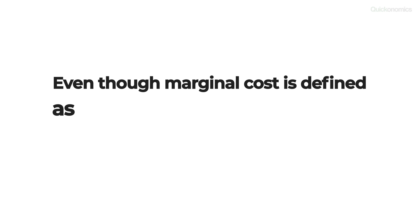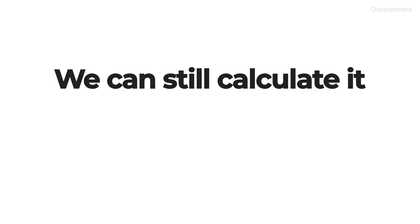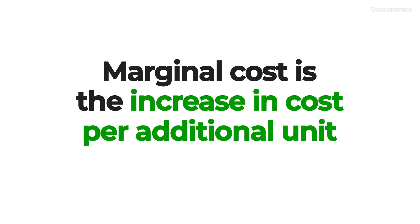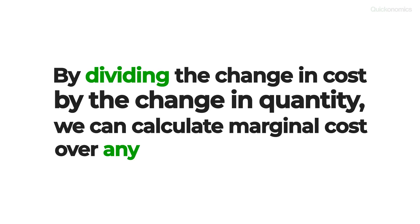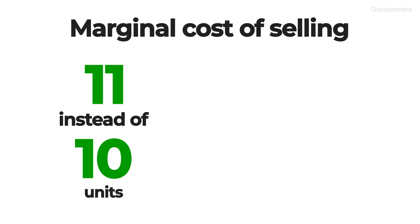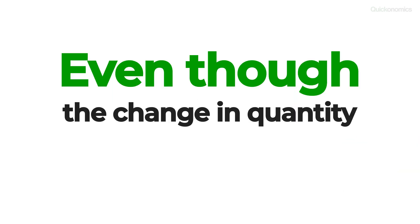Please note that even though marginal cost is defined as the change in cost added by producing one more unit of output, we can still calculate it for any given number of additional units. Keep in mind that the change in cost can vary as the level of output changes. That means the marginal cost of selling 11 instead of 10 units may be different from the marginal cost of selling 101 instead of 100 units, even though the change in quantity is the same.